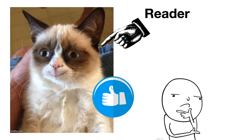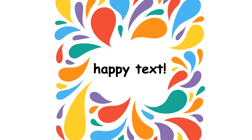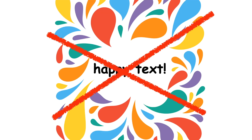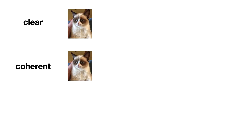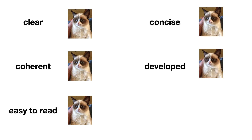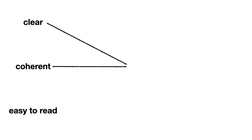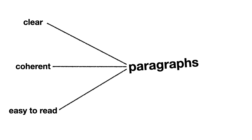But how do we make our reader happy? I don't mean that you should write a happy text. What I mean is, we need to make our text clear, coherent, easy to read, concise but developed, and relevant to the essay topic. One fundamental way to make our text clear, coherent and easy to read is to use good paragraphs.